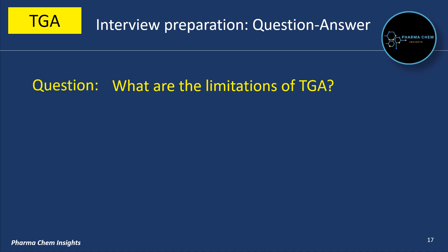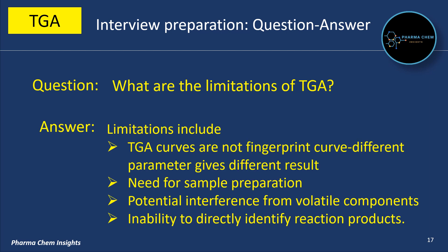What are the limitations of TGA? Limitations of TGA include: TGA curves are not fingerprint curves; different parameters give different results; the need for sample preparation; potential interference from volatile components in the sample; and the inability to directly identify reaction products.